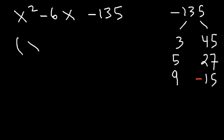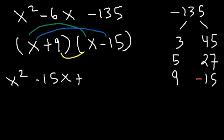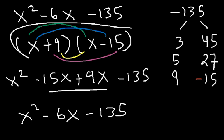So the answer is x plus 9 times x minus 15. And you can check the answer by foiling it. x times x is x squared. x times negative 15 is negative 15x. This is going to be 9x. And 9 times negative 15 is negative 135. And if you add the two middle terms, you're going to get negative 6x. So this is the answer.